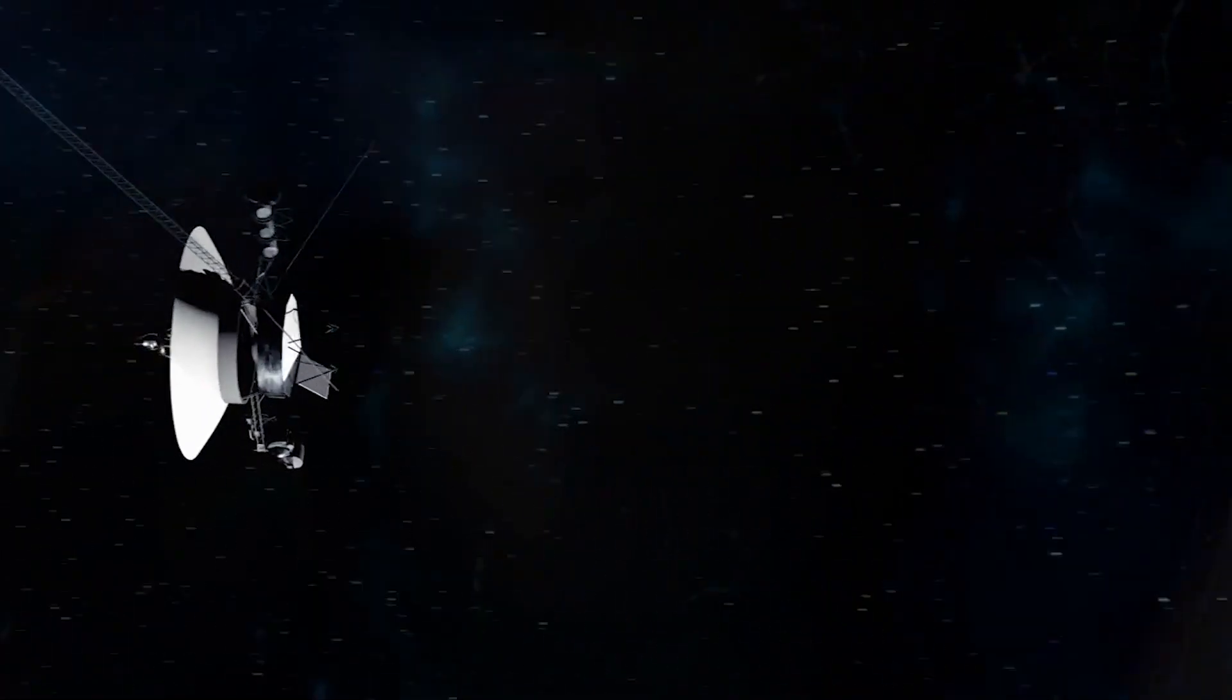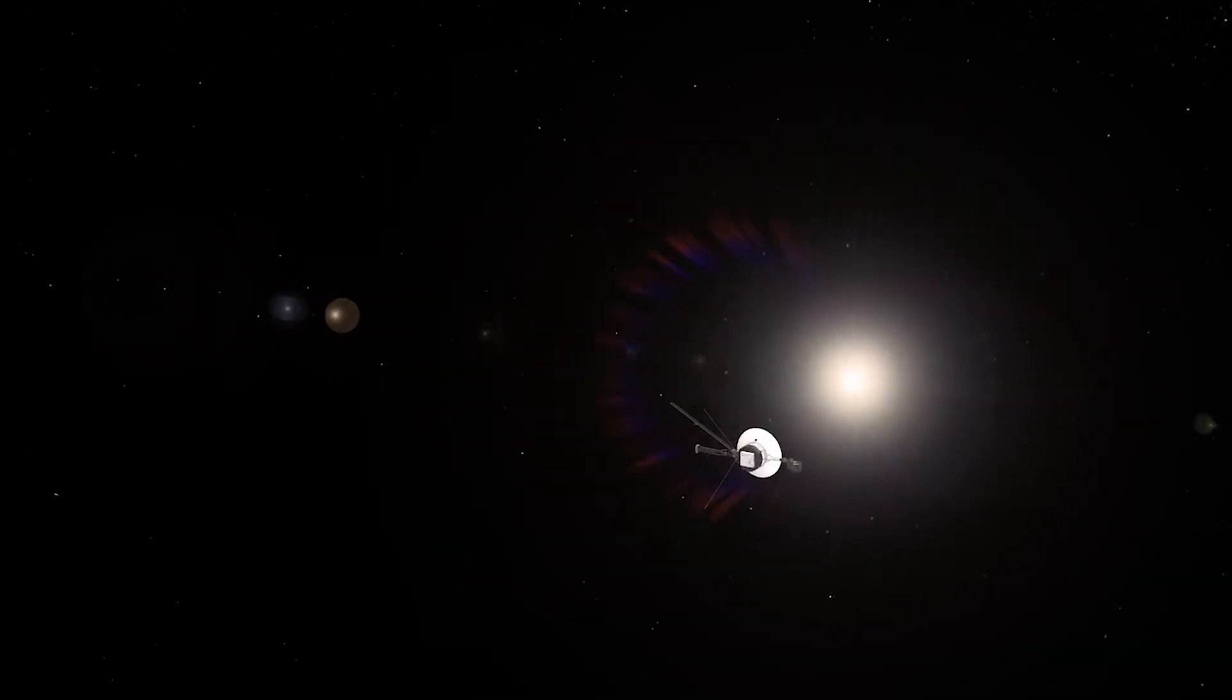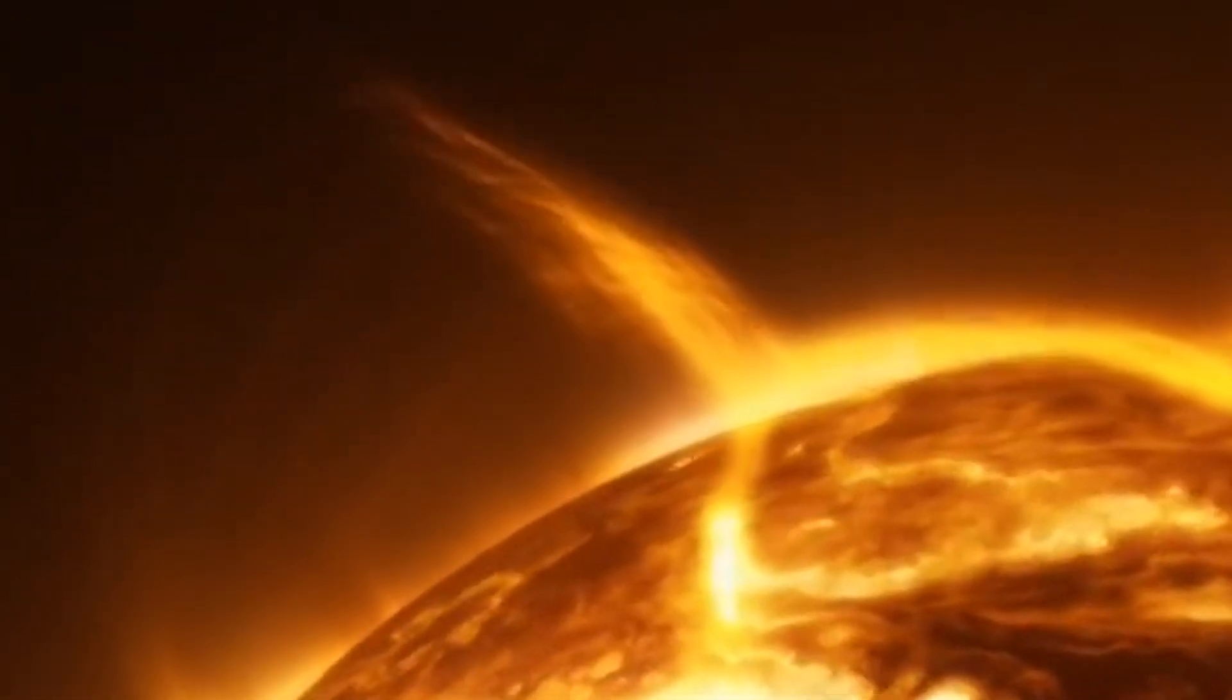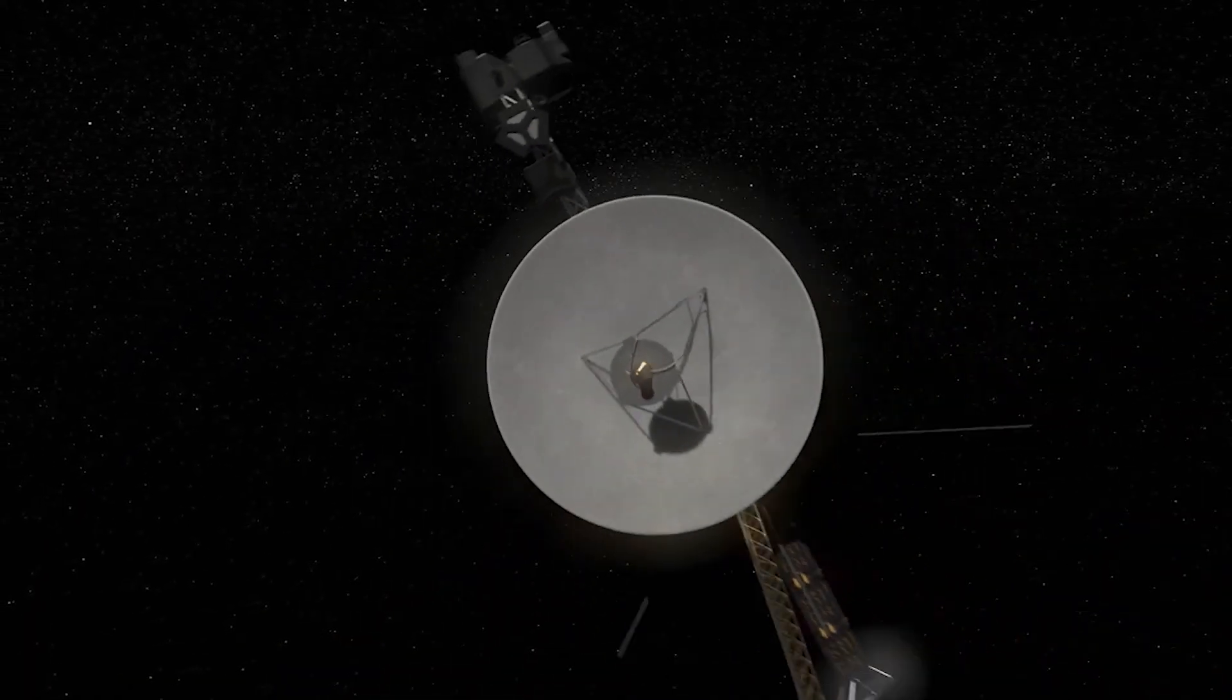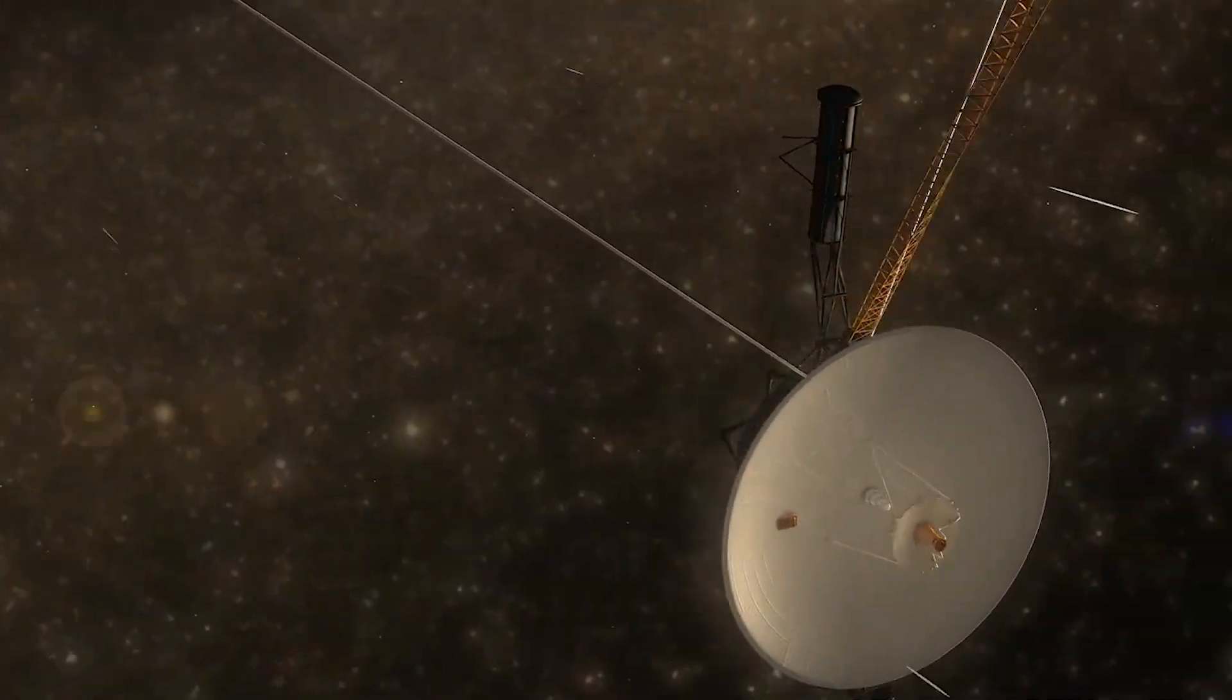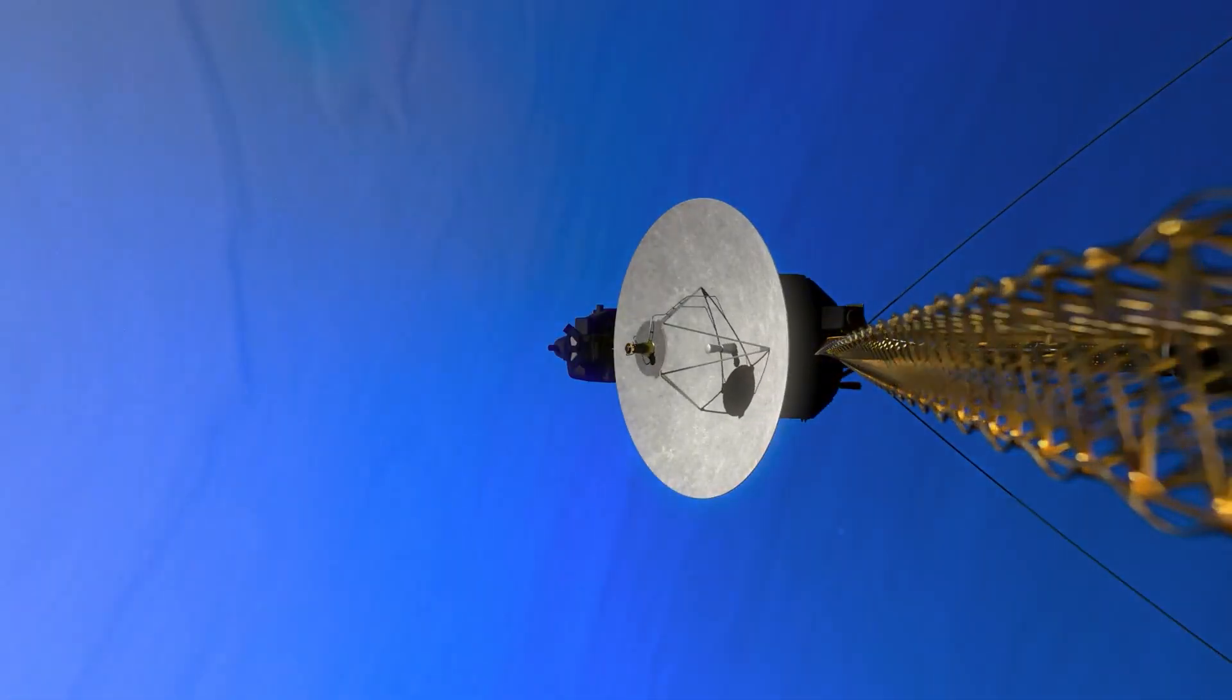When Voyager 1 crossed the heliopause, several significant changes occurred. Firstly, there was a noticeable decrease in the temperature of the charged particles in the solar wind. This temperature drop arises as the spacecraft moves beyond the direct influence of the Sun's emissions. Such a drop alone can render most spacecraft inoperable. However, Voyager 1, despite not being specifically designed to venture that far, continued to operate successfully.